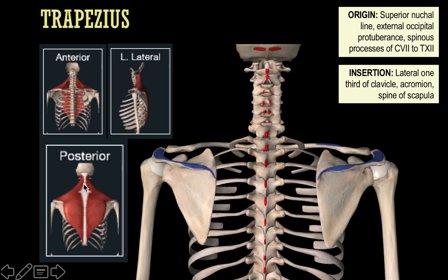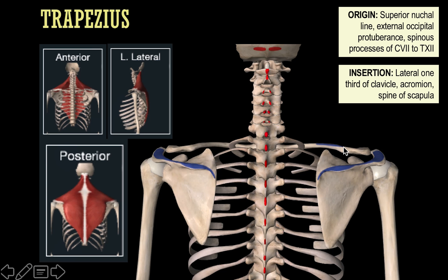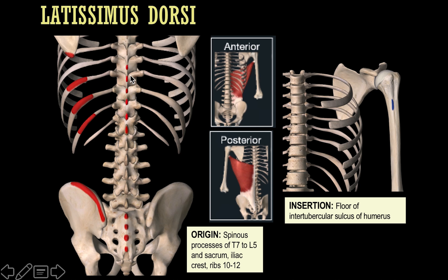Looking at the origins of the trapezius, depicted in red — remember an origin is the attachment point with the least movement, typically anchoring onto the trunk — we have the superior nuchal line on the occipital bone along with the external occipital protuberance, and then spinous processes from the cervical spine down to T12. The insertion is the fanning out of the muscle: the spine of the scapula, the acromion, and the lateral third of the clavicle.